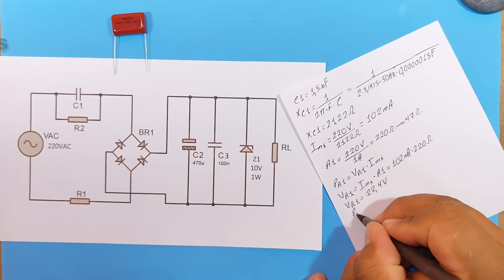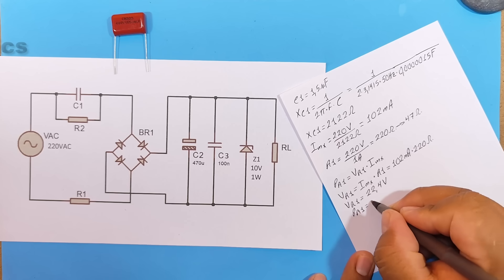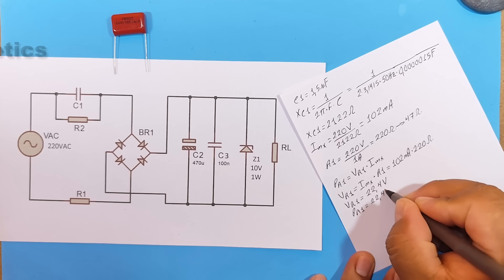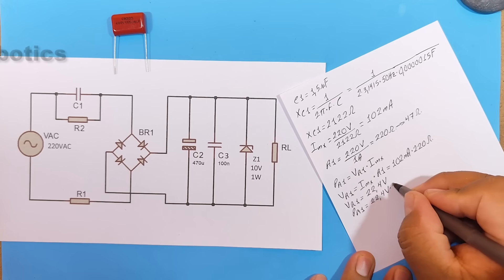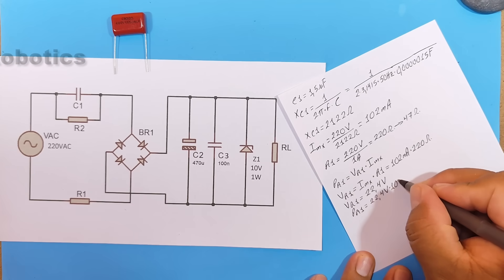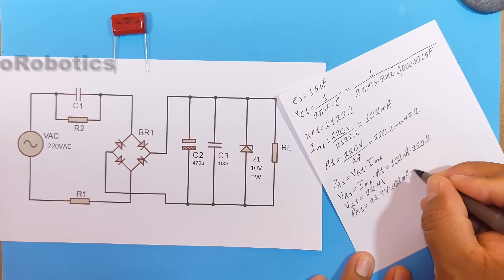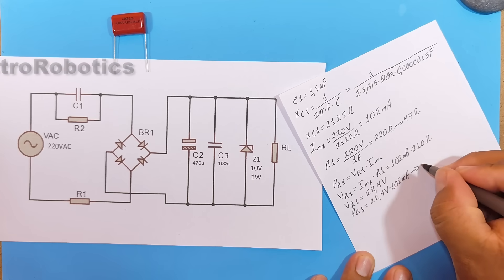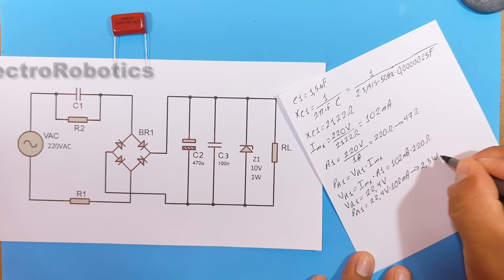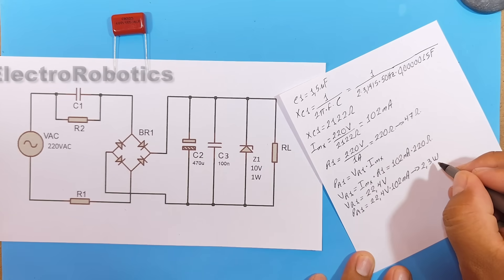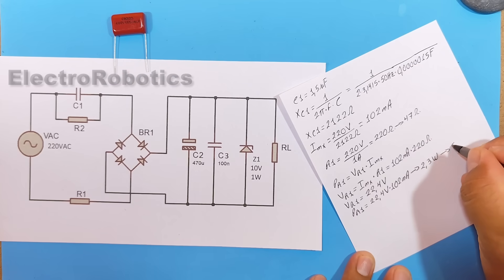With this, we can calculate the power of R1, which would be equal to 22.4 volts times 102 milliamps. This gives us a power of 2.3 watts, which means I need to use a 5 watt resistor so it doesn't burn out.